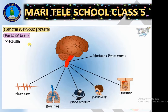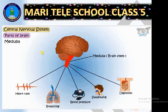The cerebrum controls all those activities which are under our control — those are called voluntary actions. But the medulla or brain stem controls involuntary actions. It is called the brain stem because, just like the stem of a plant, it forms the stem-like base of the brain.